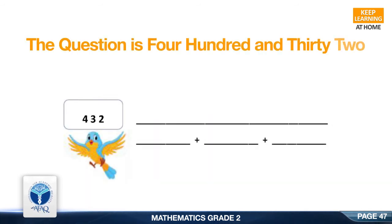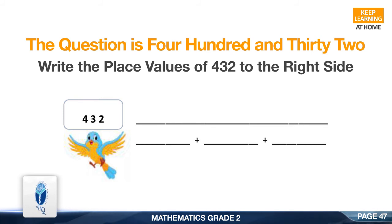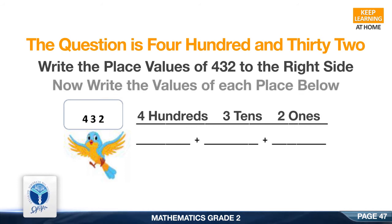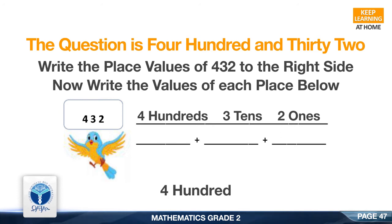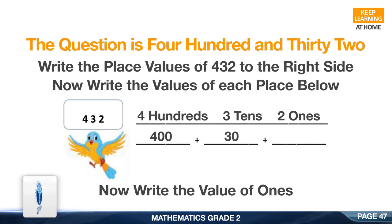Now move to the next question: 432. Write the place values of 432 to the right side. Good, it is 4 hundreds, 3 tens, and 2 ones. Now write the values of each place below: 4 hundreds is 400, 10s is 30, and 1s is 2.